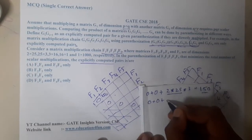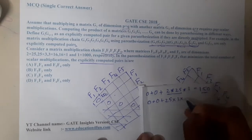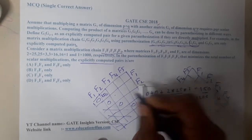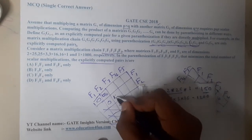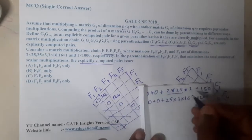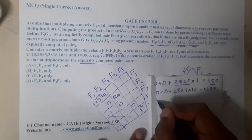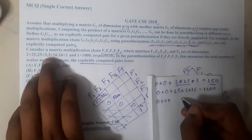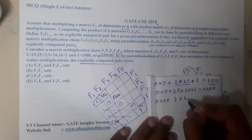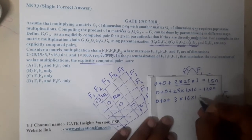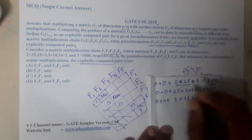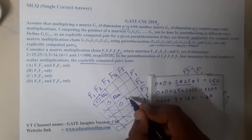Similarly, for f2×f3, the result is 0 + 0 + 25×3×16 = 1200. For f3×f4, the result is 0 + 0 + 3×16×1 = 48.